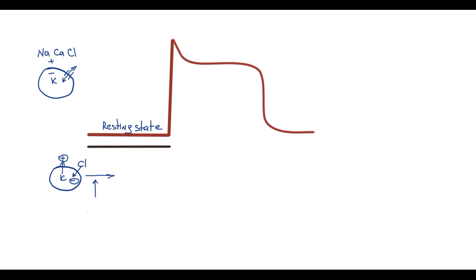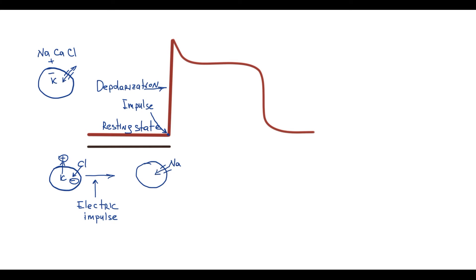When the cell receives an electric impulse, depolarization occurs due to the opening of fast sodium channels. Through these channels, sodium very rapidly and massively enters the cell, rapidly changing the action potential. In a very short period of time the charge on the outer surface of the cell membrane becomes negative and inside the cell charge becomes positive. This phase is represented on ECG as the R-wave, which has the highest amplitude and very short duration, because of the very high speed of depolarization.